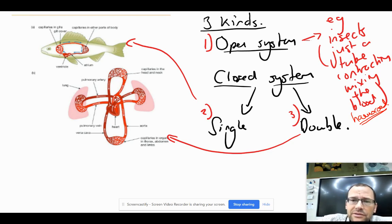Then we have an open system, and we have a closed system. Closed system: all contained within blood vessels, where insects actually aren't - some of it's kind of open within the cavity inside the organism. Closed systems: we have single and double. Single is in a fish.